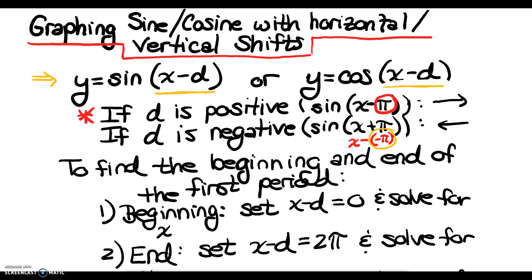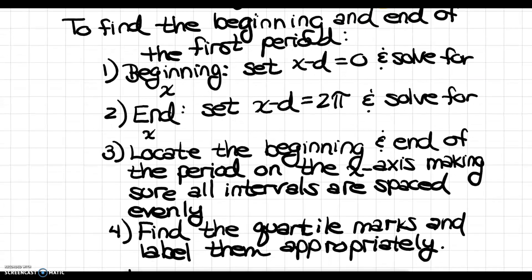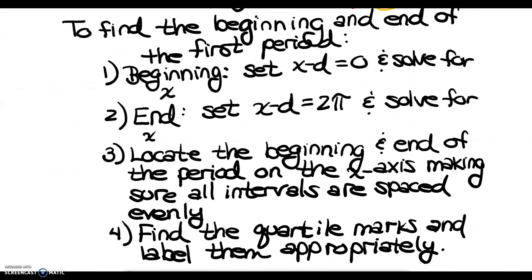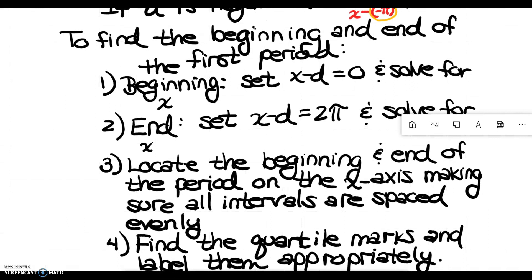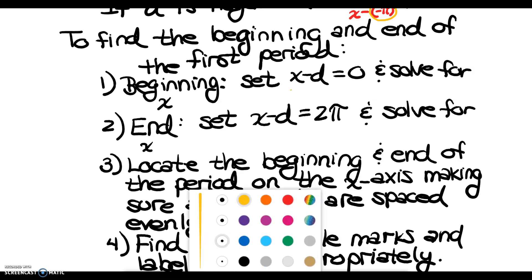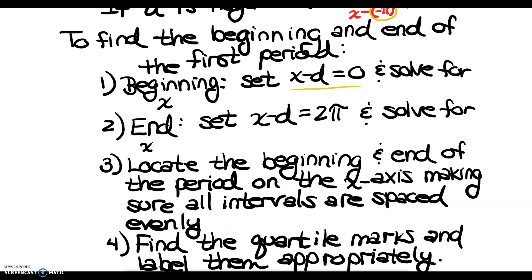Think of it as opposite of what you think: x minus pi moves your graph to the right; x plus pi moves your graph to the left. With horizontal shifts, you will not be starting your period at 0 and ending at 2 pi, so you have to find the beginning and end of your first period. The beginning is found by setting x minus d equal to 0 and solving for x. The end is found by setting x minus d equal to 2 pi and solving for x.